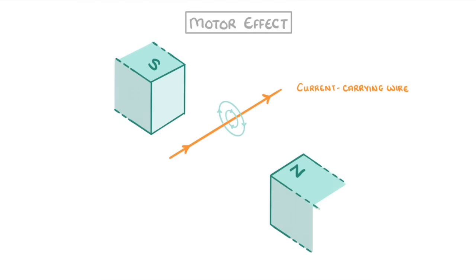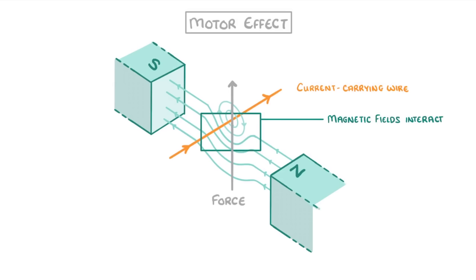Now we saw in the last video on electromagnetism that a current carrying wire will produce its own magnetic field. This means that if we place the wire between the north and south poles of two magnets, which will also have their own magnetic field, then the two magnetic fields will interact. This interaction results in a force on the wire, which will effectively push it out of the field.